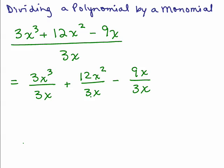Now each of these we've already gone over — how do you divide a monomial by a monomial? So now you just cancel. On the first term, the 3's cancel. Then you've got x cubed over x to the first. So you can either use your laws of exponents and say that's x to the 3 minus 1, which is x squared, or you could write out x times x times x all over x and show that one of the x's cancels.